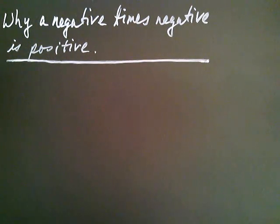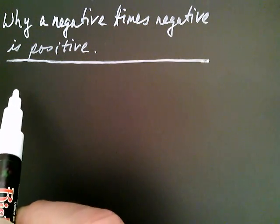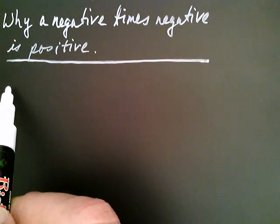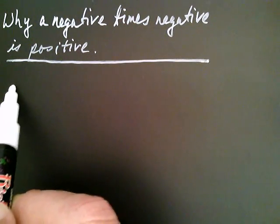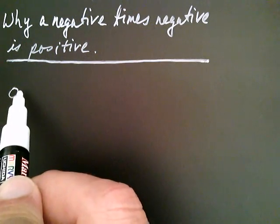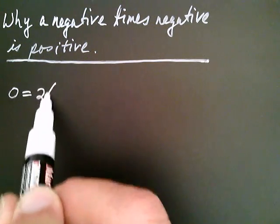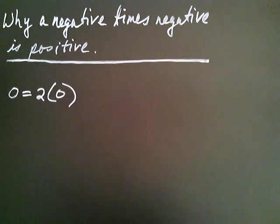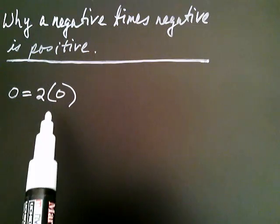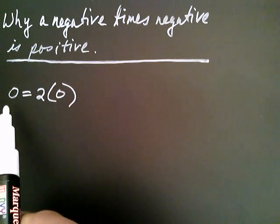Let's start off with the following observation. As we know, zero is equal to two times zero, because zero times anything is always zero.